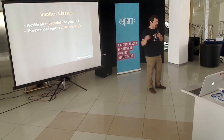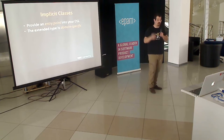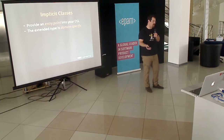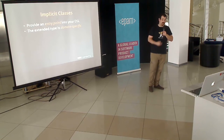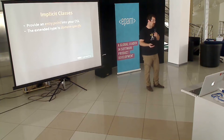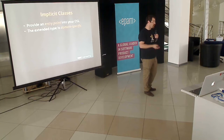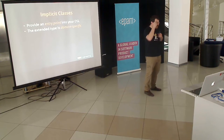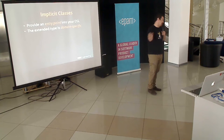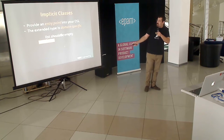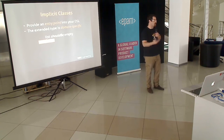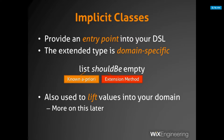We also have a failure message because the compiler can't guess what the predicate does — the person implementing the predicate must provide a failure message. Next, we need an entry point into our DSL. The only thing we actually know ahead of time is the data, so we need to extend the type of that piece of data to support our DSL. We'll add an implicit class called ValidationContext — it's generic over any arbitrary type T and it adds a 'shouldBe' method that takes a predicate of T.